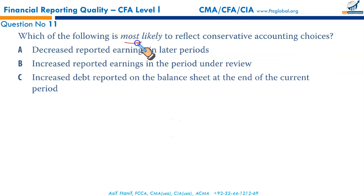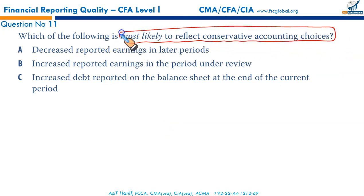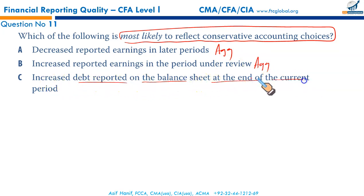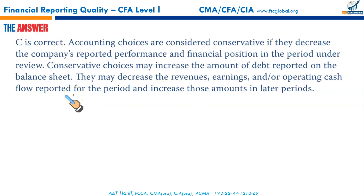Which of the following most likely reflects a conservative accounting choice? Decreasing reported earnings in later periods to make more earnings now — aggressive. Increasing reported earnings in the period under review — aggressive. The conservative choice is increasing debt reported on the balance sheet at the end of the current period — increasing expenses, charging more allowance for doubtful debts, increasing valuation allowance, increasing debt. This is the conservative approach. C is the correct option.